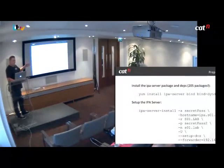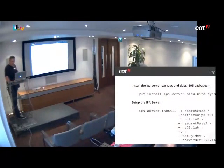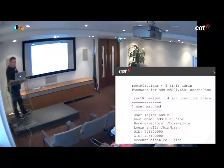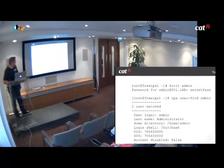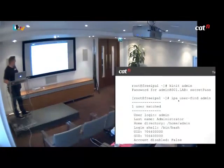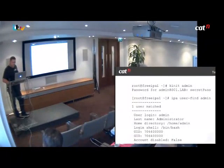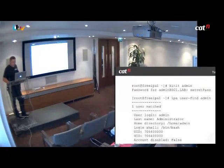From that point you can log into the control panel and you've got a centralized system for managing all of your users. We can do a simple test: log into the server, authenticate ourselves to Kerberos locally, and from that point use the FreeIPA command line tool — just 'ipa' — to find the local admin user which was set up during the installation process. From that point we're ready to enroll our first client.